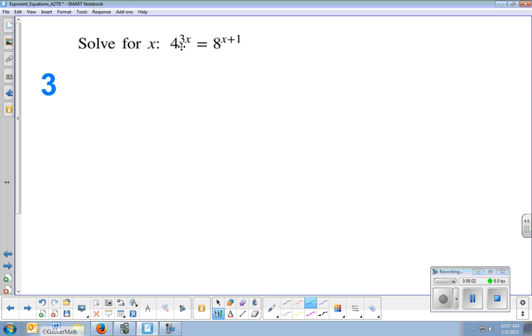One more. 4 to the 3x equals 8 to the x plus 1. So my base here is 4. My base here is 8. And this is where you have to be careful. Because is 8 a power of 4? No, it is not. 4 to the 1st is 4, but 4 squared is 16. It skips 8. And 4 is not a power of 8. I can't turn one into the other. So this is a case where you have to change both bases. And you have to think, 4 is a power of what? And 8 is a power of what? They are both powers of 2.